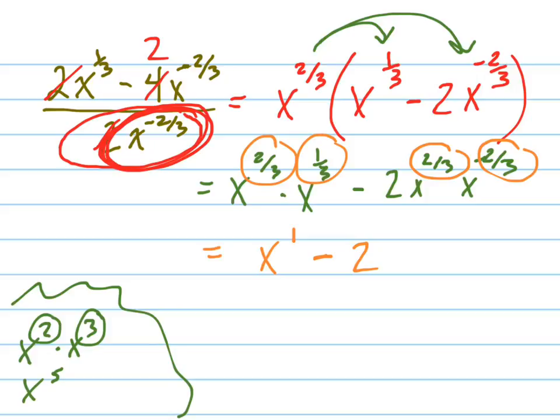What's x to the 0? 1. It's 1. So there's your answer. It's just x minus 2. Cool.